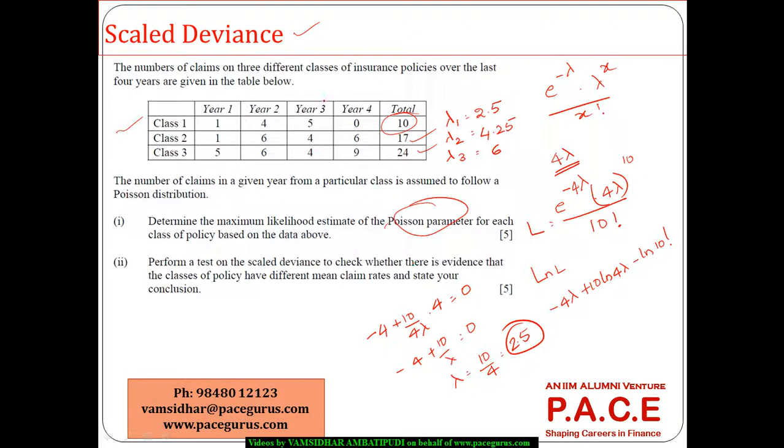So using the same logic I can very well go ahead and at the same time perform a test on the scaled deviance to check whether there is evidence that the classes of policies have different mean claim rates. So now I have to really differentiate whether the rates are different across the different classes.